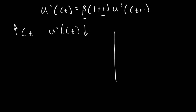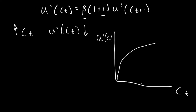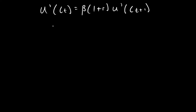If we were to draw this quickly on a graph, with ct on the x-axis and u of ct on the y-axis, it would look something like this — because as ct increases, the increase in utility starts to decrease. That's what we mean by diminishing marginal utility. We can see by looking at this equation that consumption over time across the two periods depends on the rate of time preference relative to the interest rate.